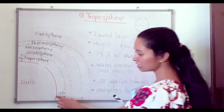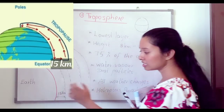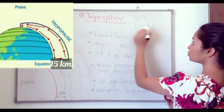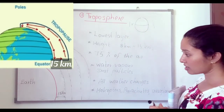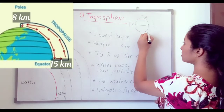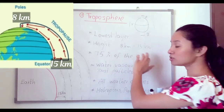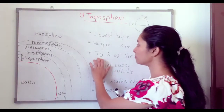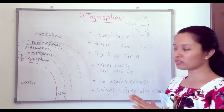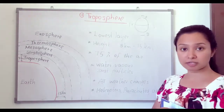Near the equator, the height of this layer is 15 kilometers from the sea level. Near the polar region, it is 8 kilometers. So we can say the height is 8 to 15 kilometers. Nearly 75 percent of the air in the atmosphere is in the troposphere, meaning there are more gases in the troposphere.